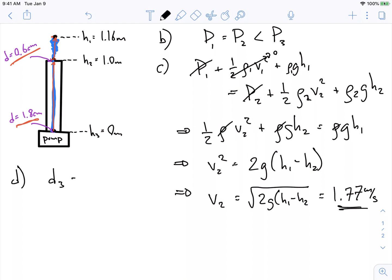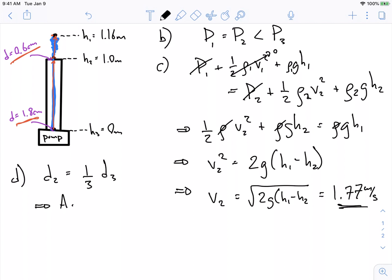We're told that D₂ equals one-third D₃, which implies that A₂, the area, is equal to one-ninth the area at 3. Because we get areas of circles by squaring radii, which are half the diameters. So when we square the ratios, we get one-ninth that come out.